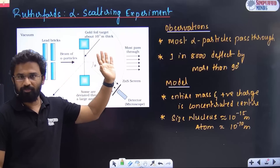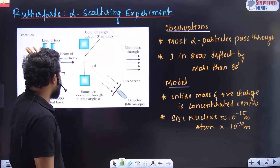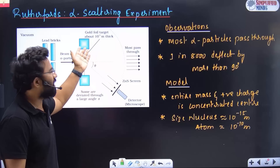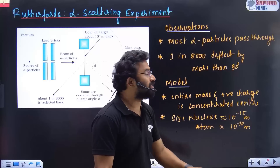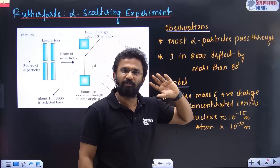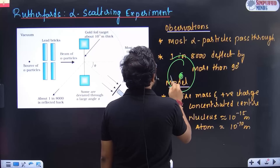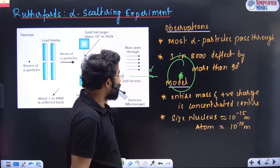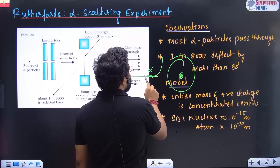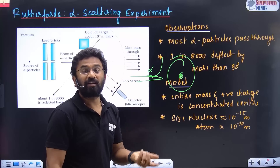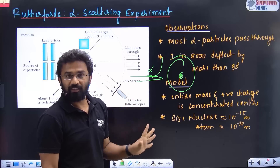Coming to the first topic: atoms. The first model is the Gold Foil model — Rutherford's experiment. A gold foil is taken and alpha particles are fired at it. Scattering happens and you measure using a detector. The key observation: most alpha particles pass through the thin gold foil, which indicates the atom is mostly empty. Alpha particles are positive, so positive-positive repulsion occurs. But one in 8000 deflected more than 90 degrees, indicating there is a concentrated positive charge inside.